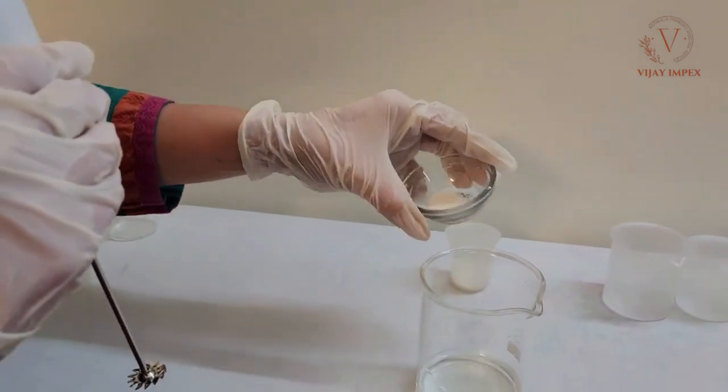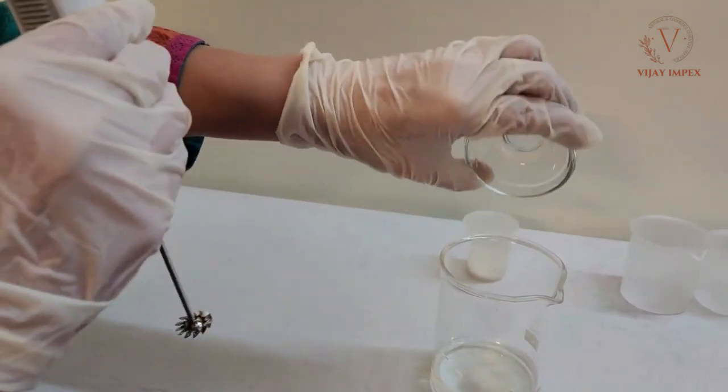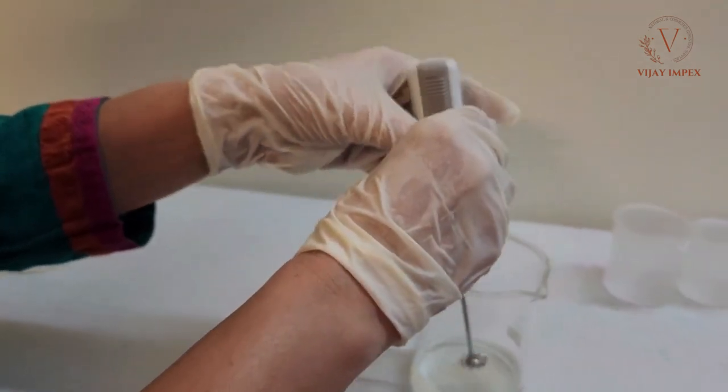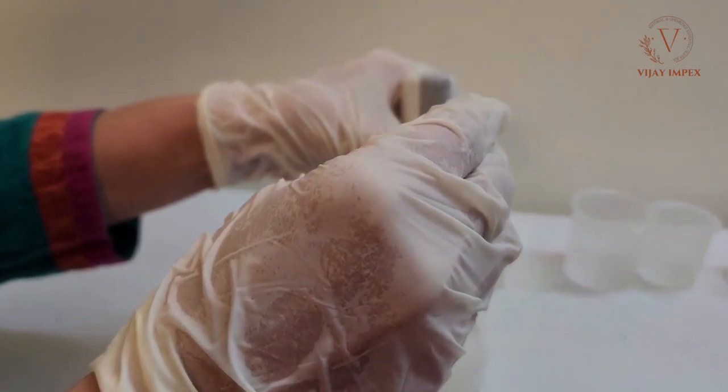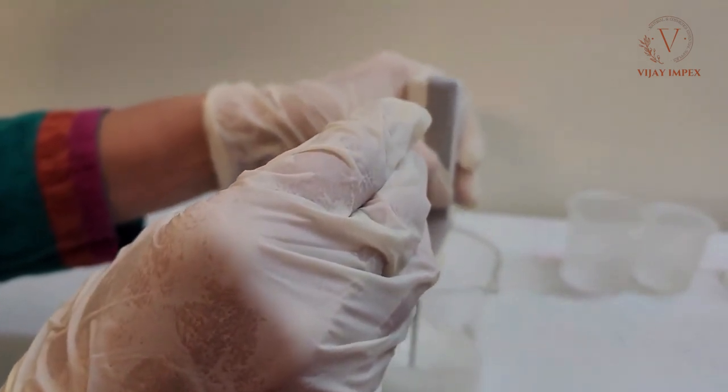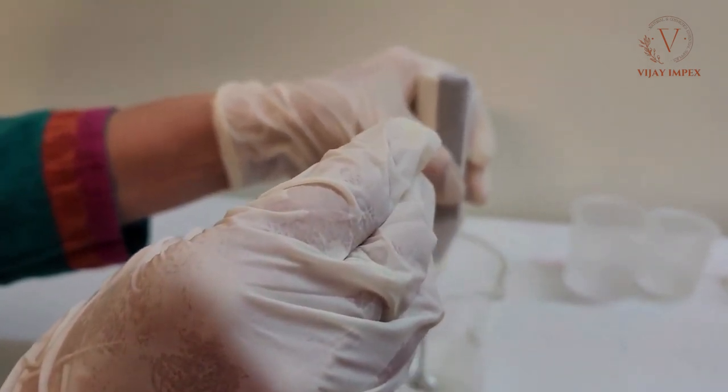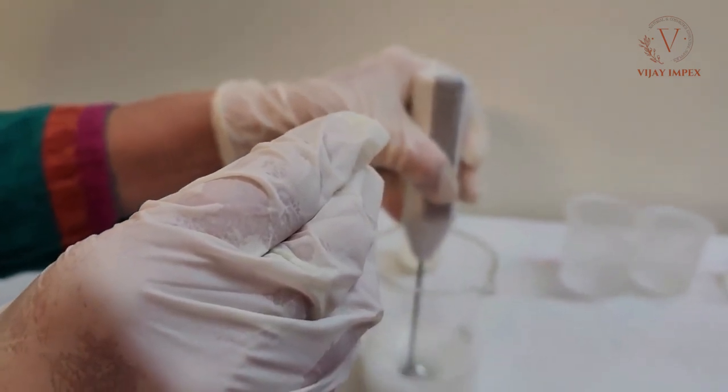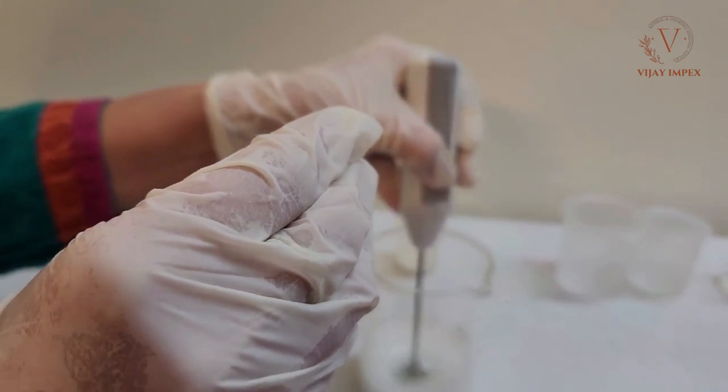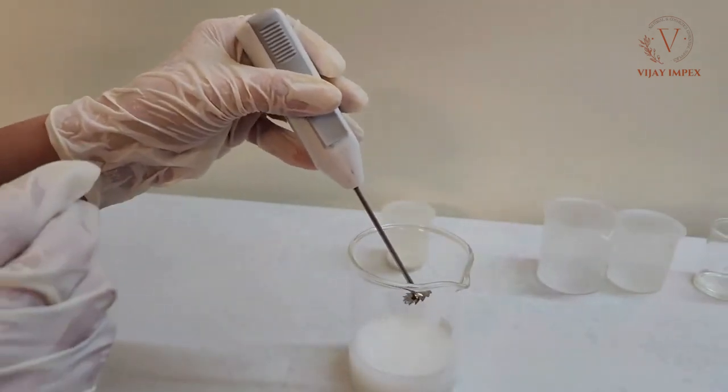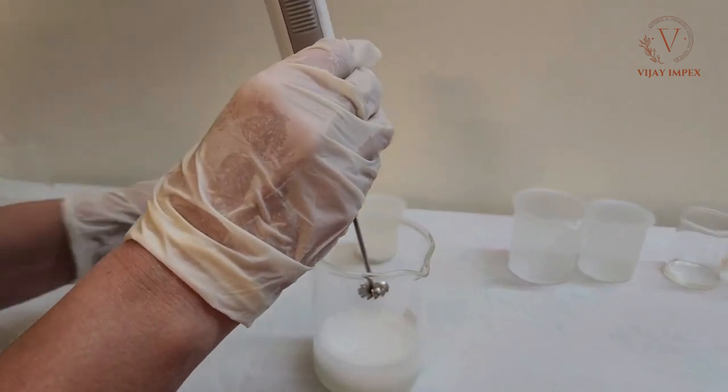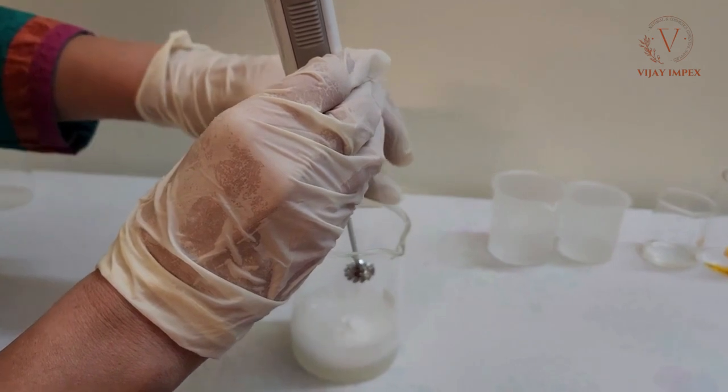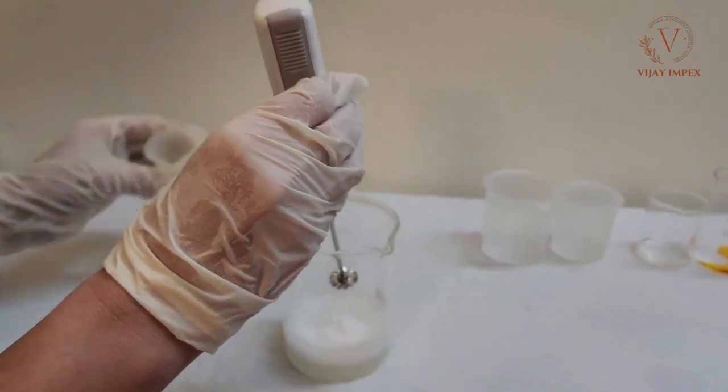Let's get started. I'll be using a blender to blend in Sepimax. So I'm adding Solagum first into my mixture and blending it, and then I'll add Sepimax. The foam will completely settle down in a while so don't worry about that. Mix and blend in your ingredients really well.